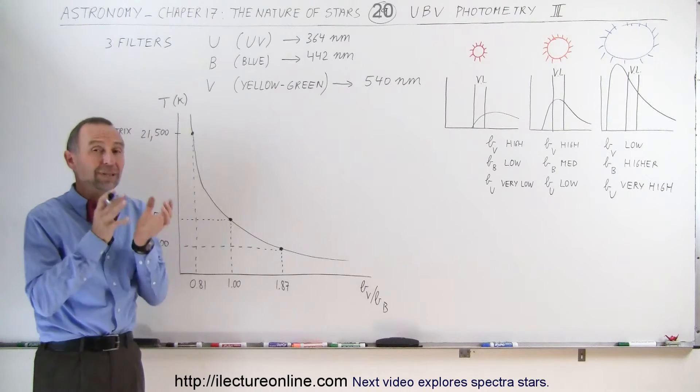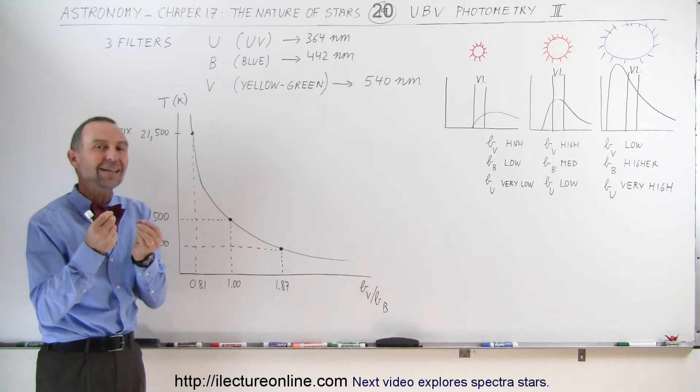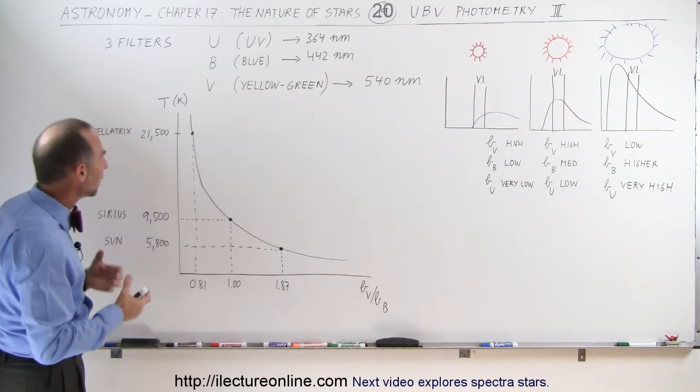And then when we look at the light of a particular star with the three different filters, and then we calculate the ratios of the intensity of the brightness coming through to us.